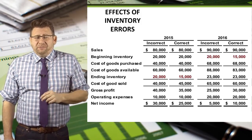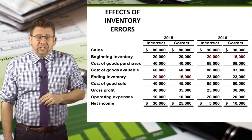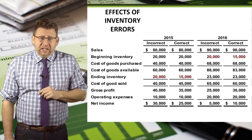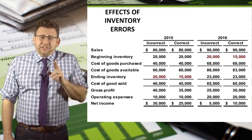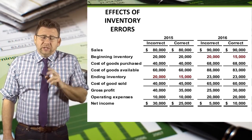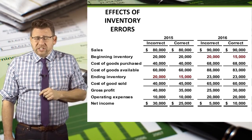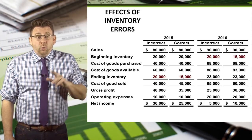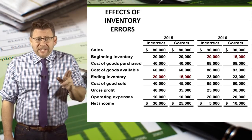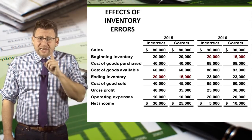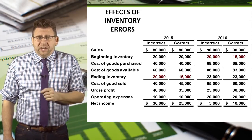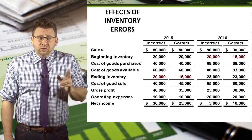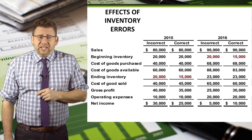Assuming a correct inventory count in 2016, cost of goods sold is now overstated by $5,000, which means net income is now understated by $5,000 in 2016. The $5,000 error reverses itself.